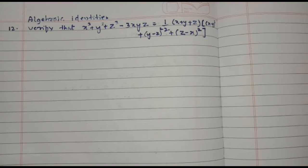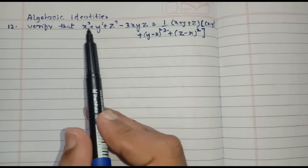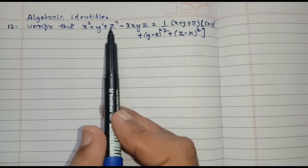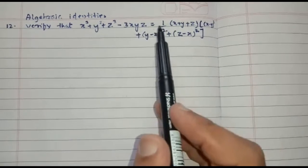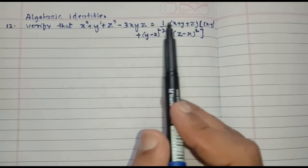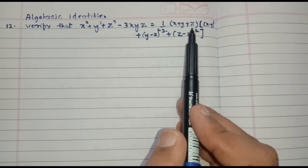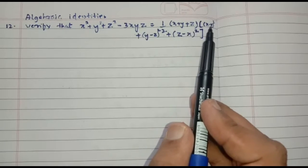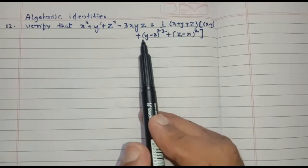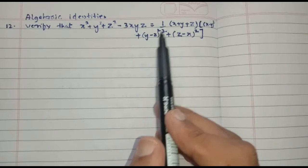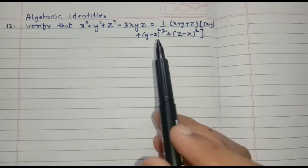The question is: verify that x cube plus y cube plus z cube minus 3xyz is equal to 1 by 2 into x plus y plus z into x minus y whole square plus y minus z whole square plus z minus x whole square.